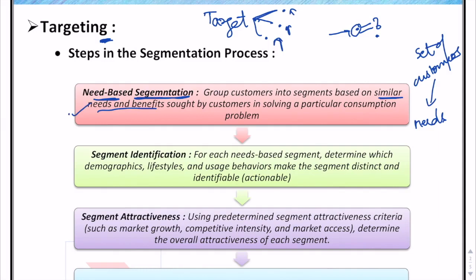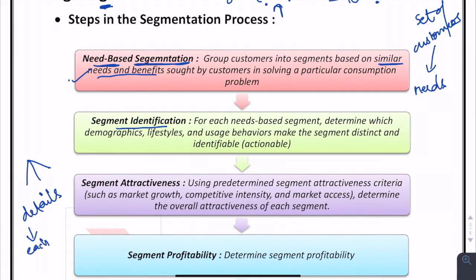Next, moving on to segment identification. After dividing the target audience into segments, the marketer has to analyze details about each segment — details like demographics, lifestyles, and usage behaviors. These are the characteristics which make a segment distinct and distinguishable from another segment.